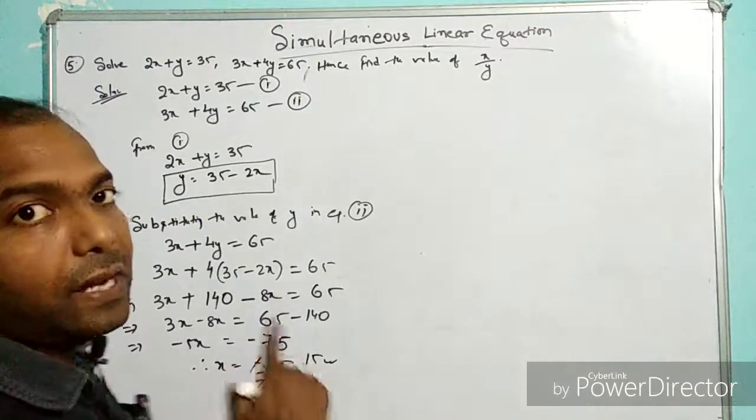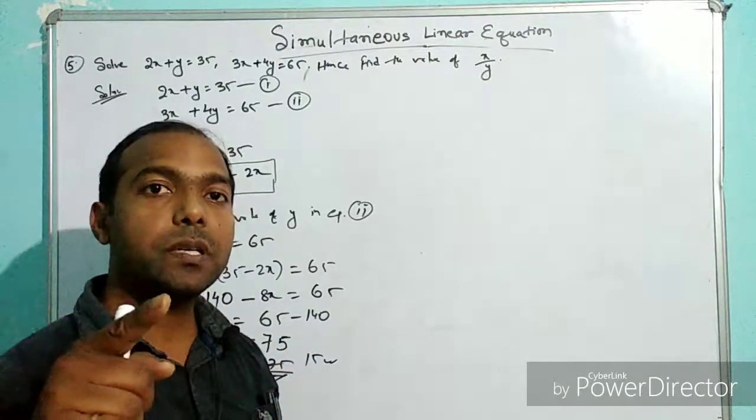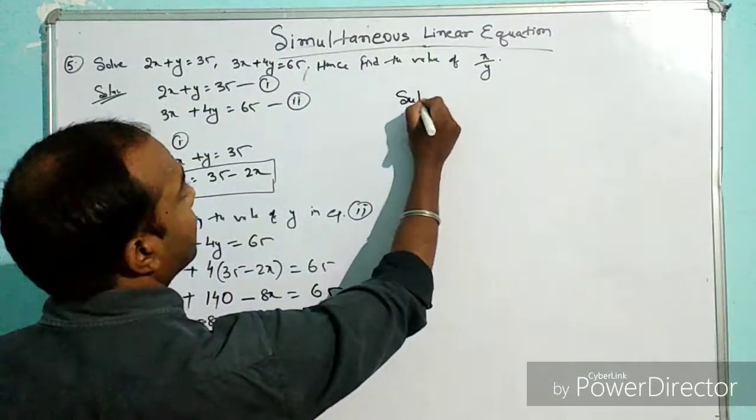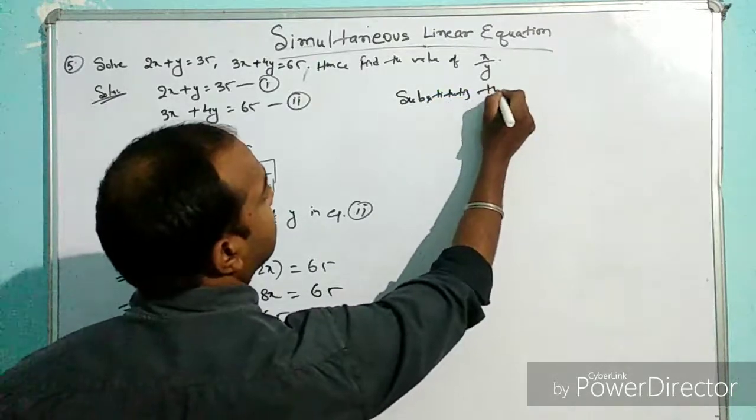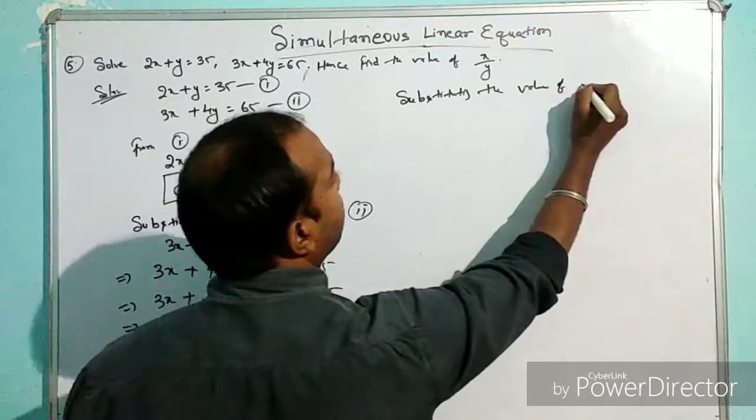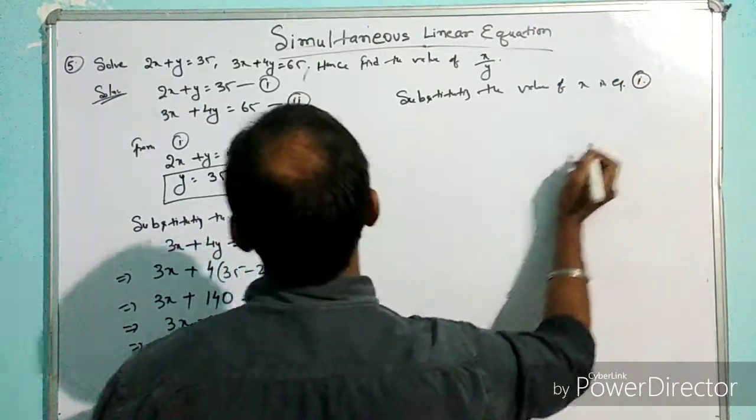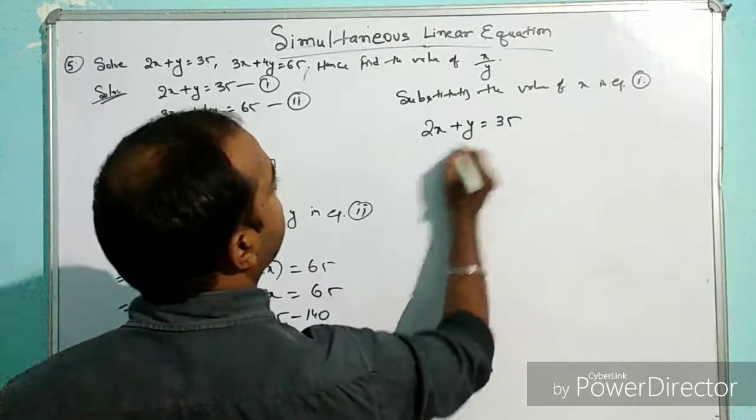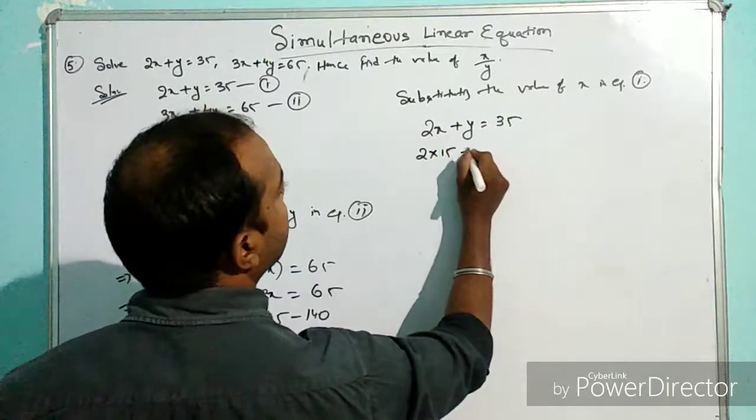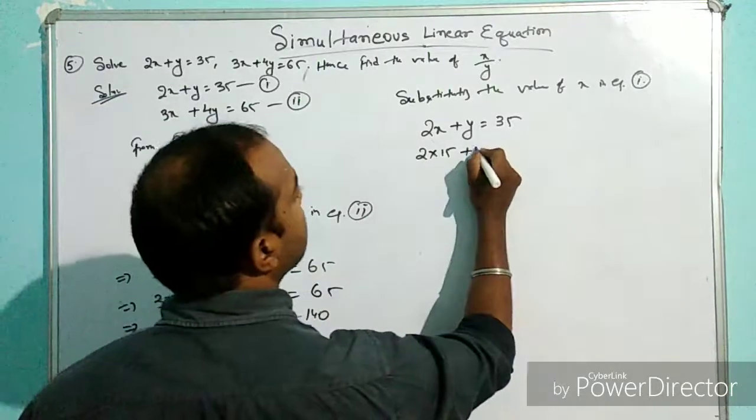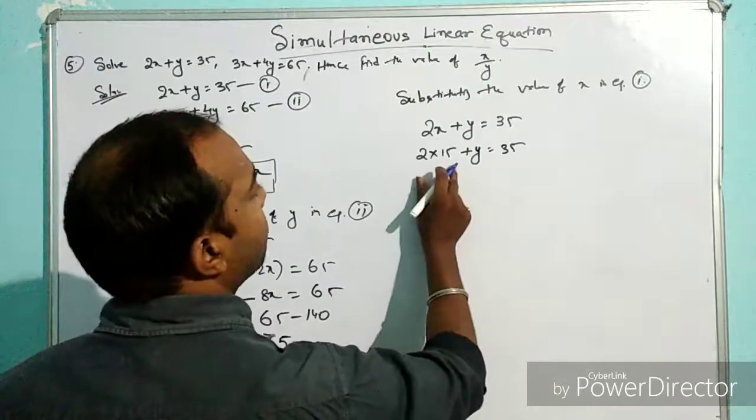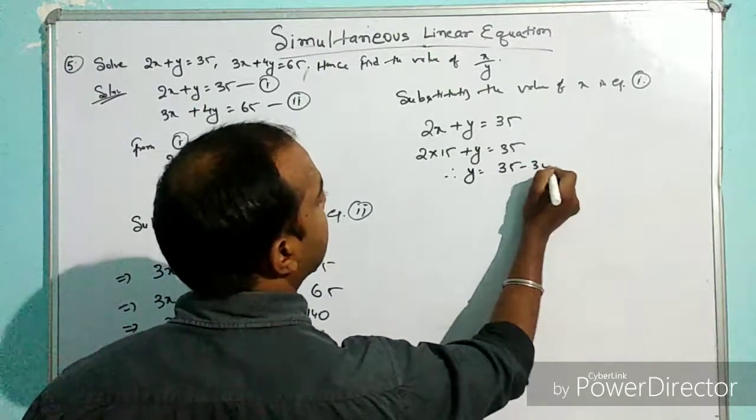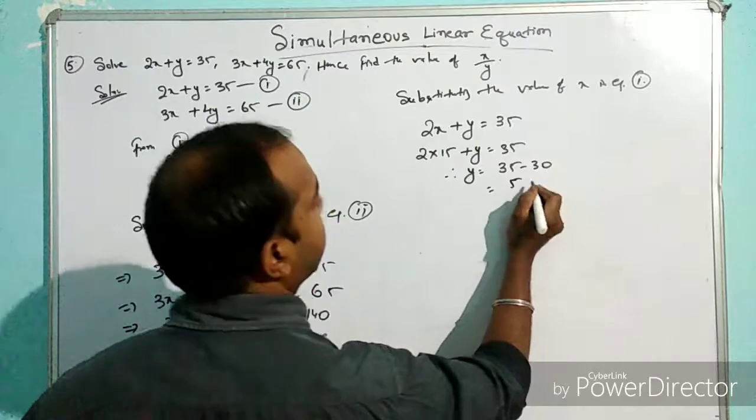Now we will find the value of y by substituting this value of x into equation 1. We have 2x + y = 35, so 2(15) + y = 35. That's 30 + y = 35. Therefore, y = 35 - 30 = 5.